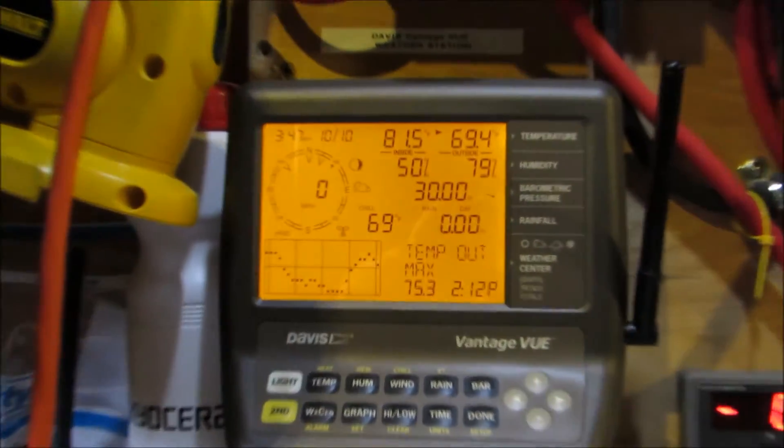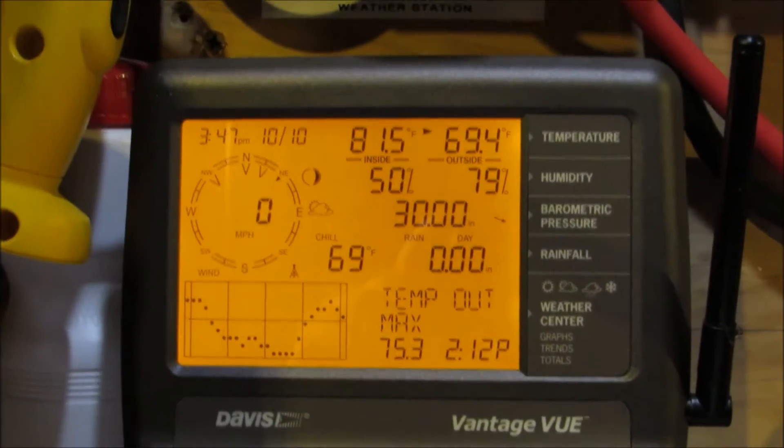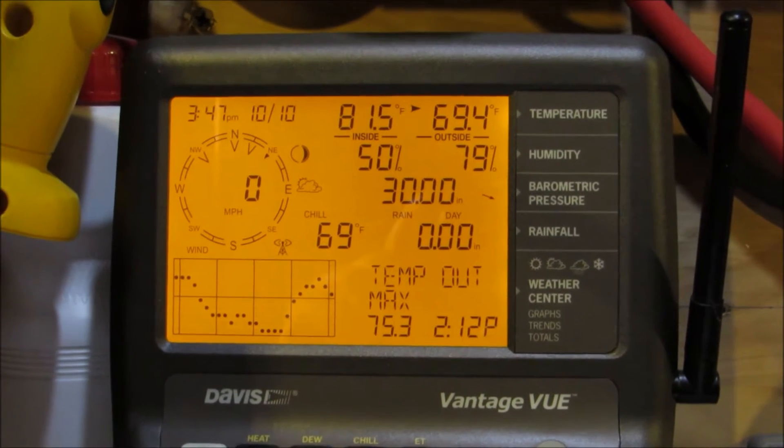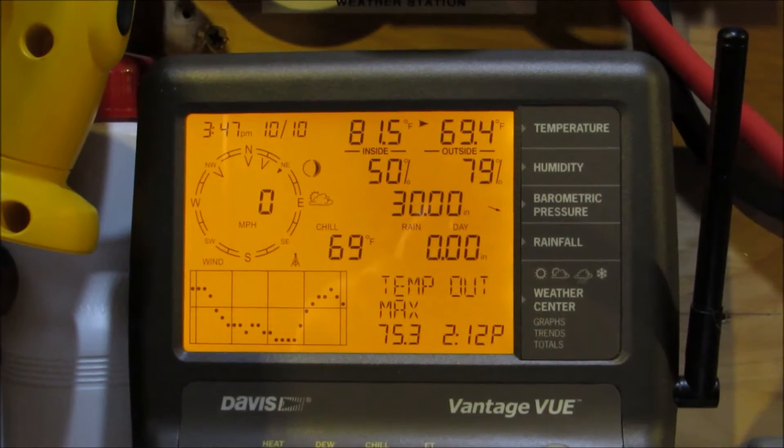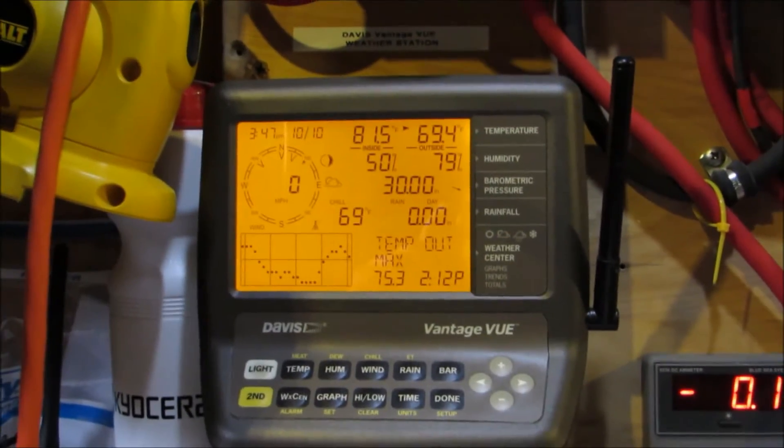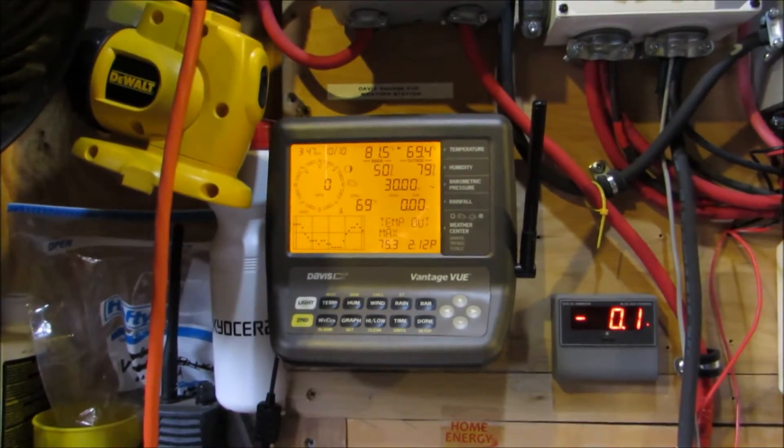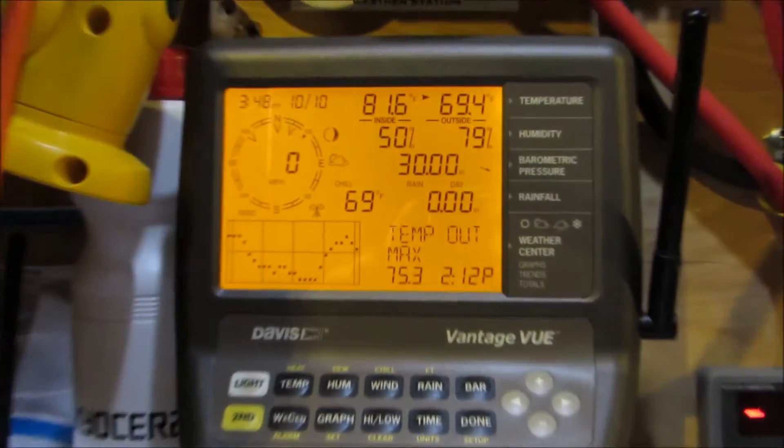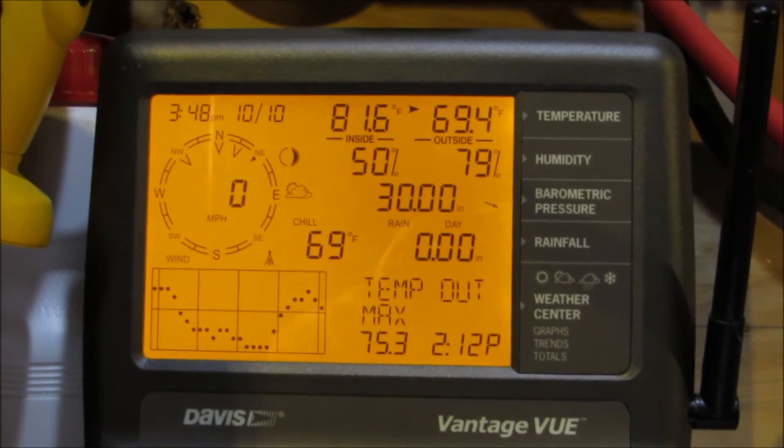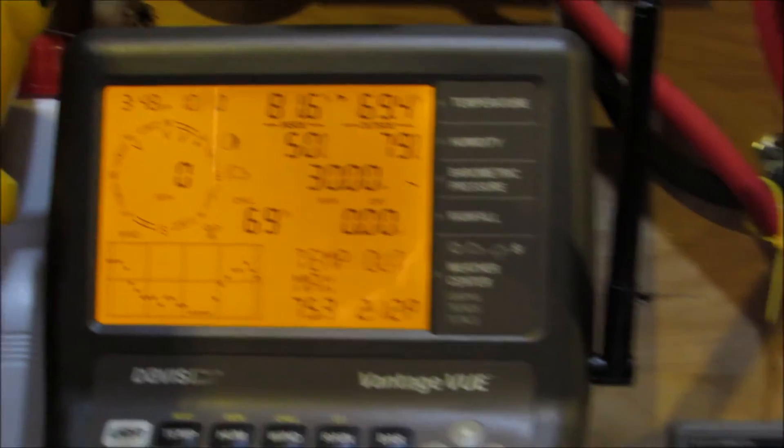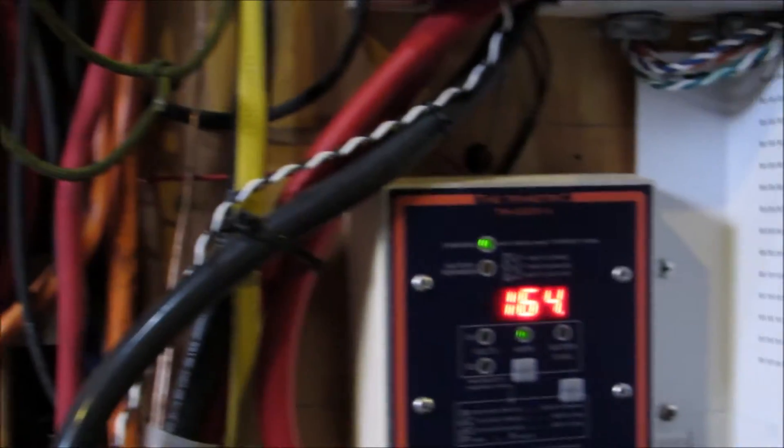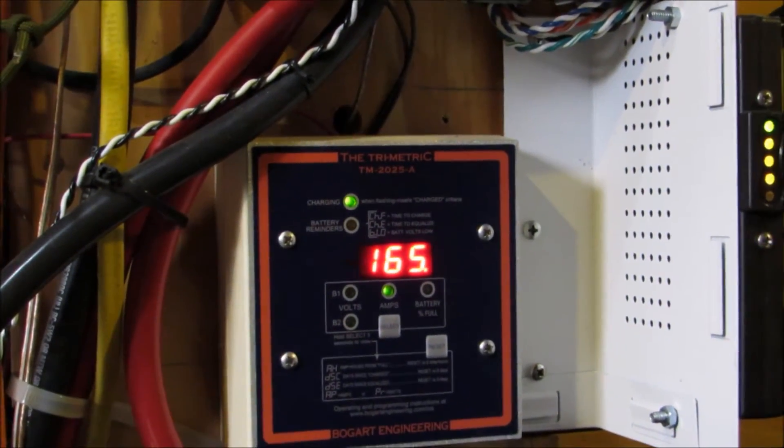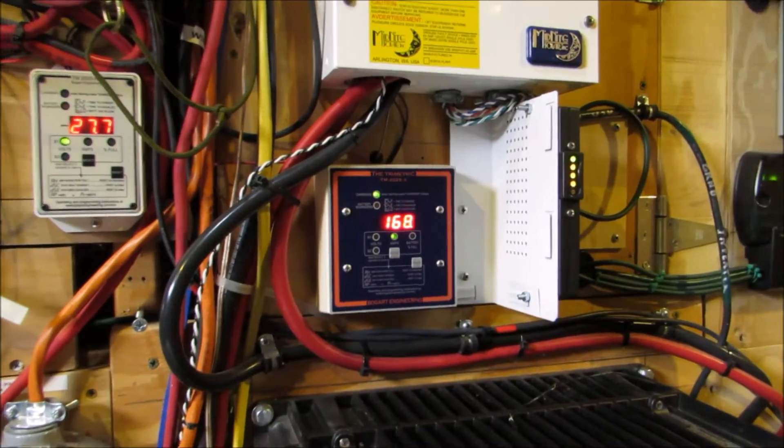69.4 outside by 81.5 in here because that inverter is like a heater. We had some good sun earlier, but now it's clouding up. It looks like it's gonna start to rain. The barometer is falling pretty slowly. We're making 27.7 volts and we're at 164 watts right now - no wind, just solar.